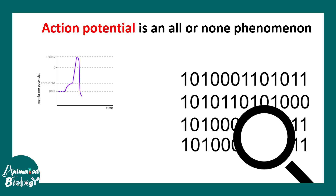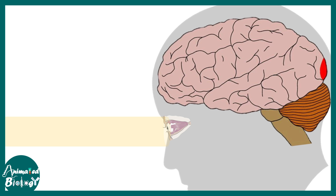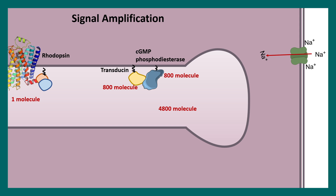Action potential is an all-or-none phenomenon — it's like a binary code. The occurrence of an action potential means something, and the absence also carries meaning. When light hits the rod cells, they stop firing due to cyclic GMP depletion, and that is how cyclic GMP is essential for visual information processing in the visual cortex.